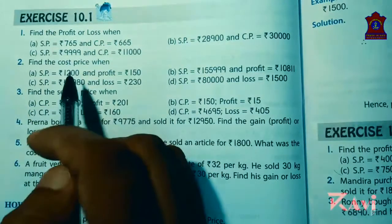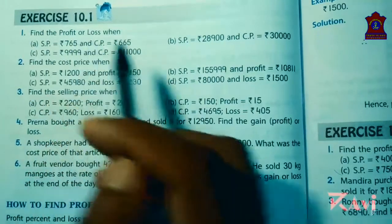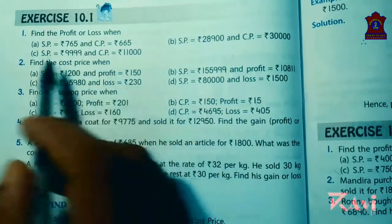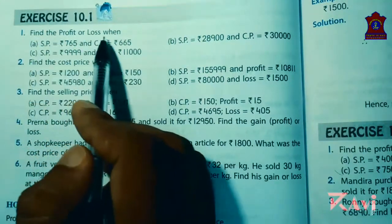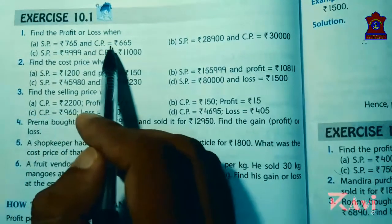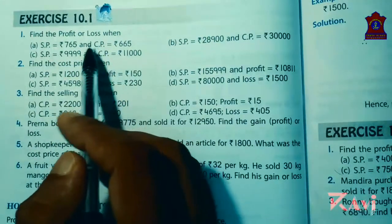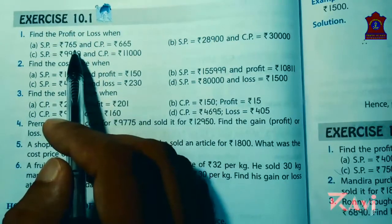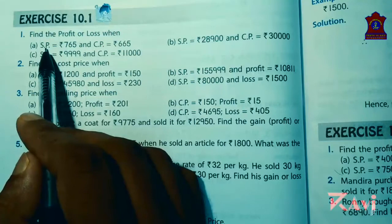Good morning students. Today we shall start Exercise 10.1 of Chapter 10, Profit and Loss. Question number one: find the profit or loss when SP is 765 and CP is 665. To know whether we are getting profit or loss, look at the question carefully. See here, SP is...